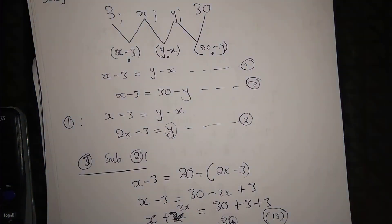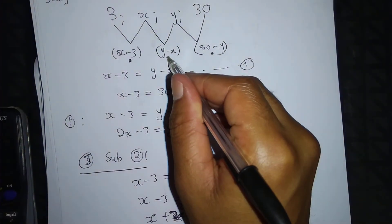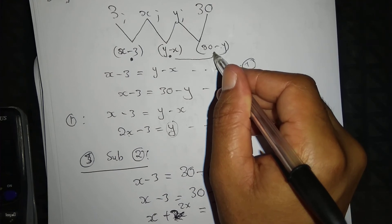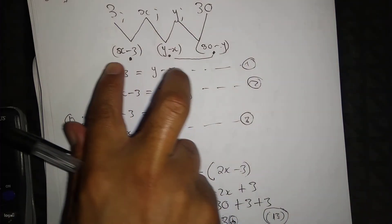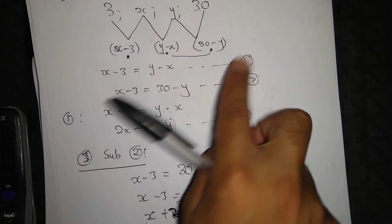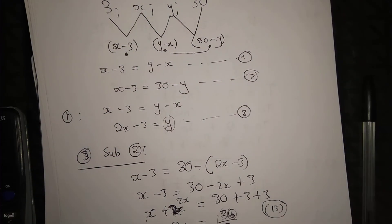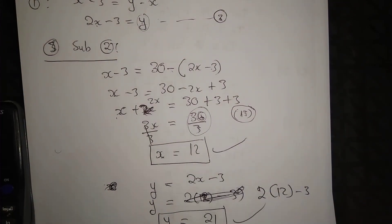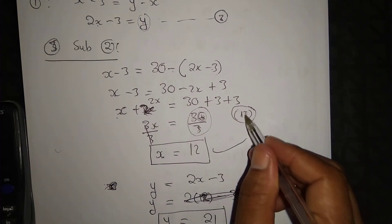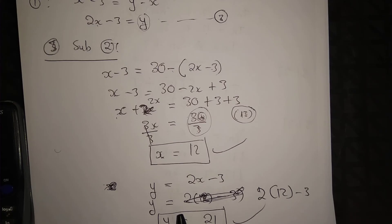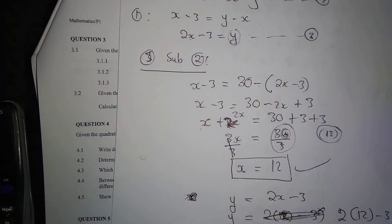We can verify using equation 2: y − x and 30 − y should give the same common difference. That checks out. So x = 12 and y = 21. Thanks for watching — if you enjoyed this video, leave a thumbs up, ask questions in the comments, and please subscribe. There are links to other videos in the description below. Bye!